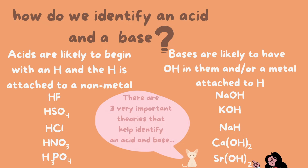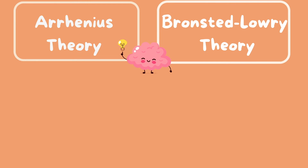There are three important theories that can help identify an acid and a base. However, we are only going to emphasize two of the three theories — the Arrhenius theory and the Bronsted-Lowry theory — because these are the only two theories I've seen on the practice TEAS exam. If you are enrolled in a high school or college chemistry course, you will need to know the third theory, which I will touch on later.